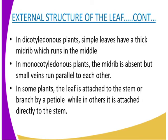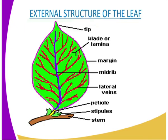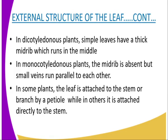In some plants, the leaf is attached to the stem or branch by a petiole, while in others it is attached directly to the stem. As you can see from the diagram, the petiole is the part of the leaf whereby the leaf is joined to the main plant.